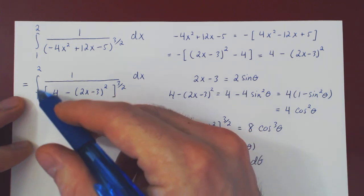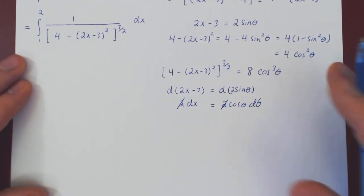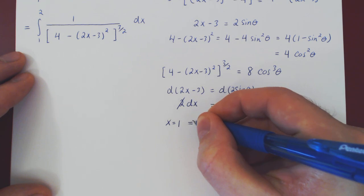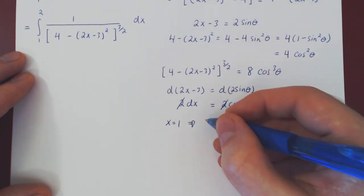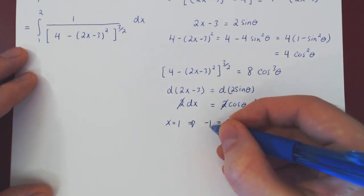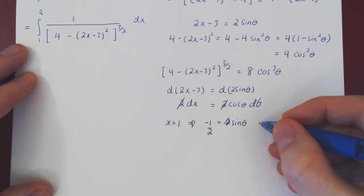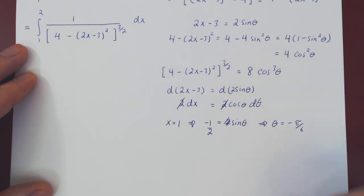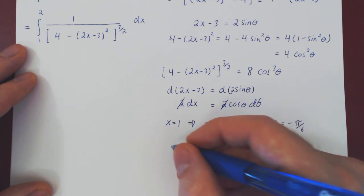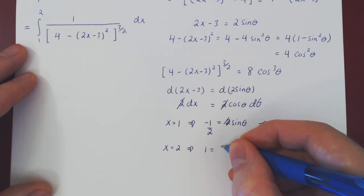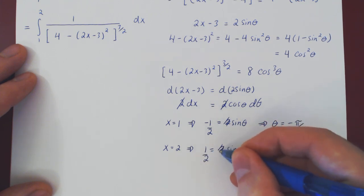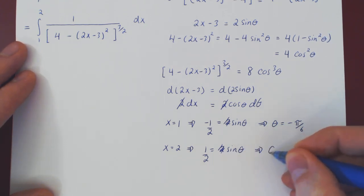Now we have everything except our new bounds of integration. We need θ when x = 1 and x = 2. When x = 1: 2(1) − 3 = −1 = 2sinθ, so sinθ = −1/2, which gives θ = −π/6. When x = 2: 2(2) − 3 = 1 = 2sinθ, so sinθ = 1/2, which gives θ = π/6.